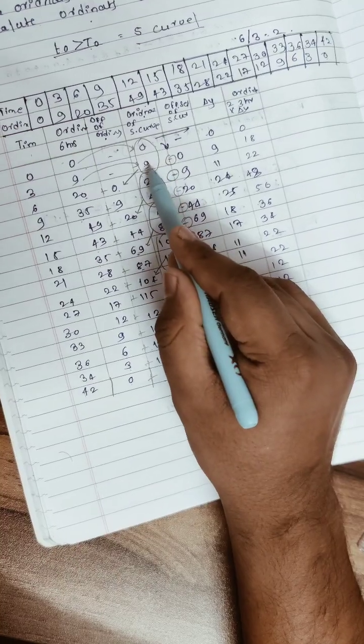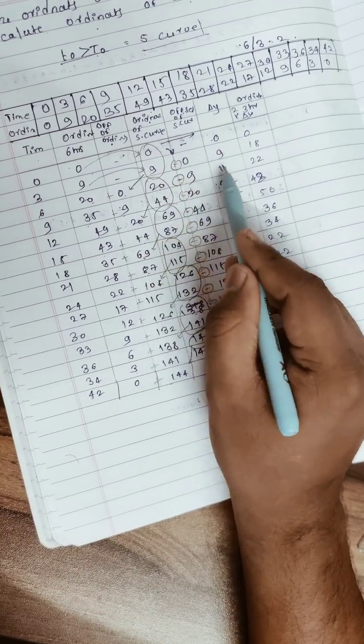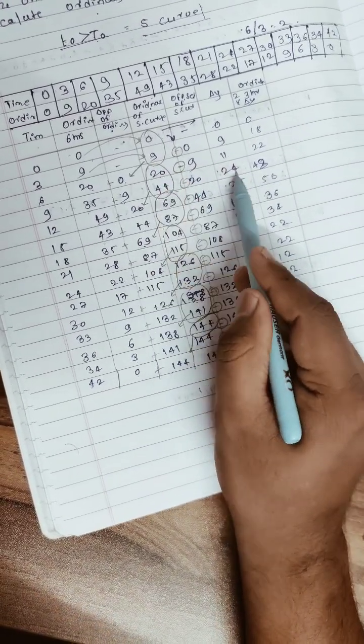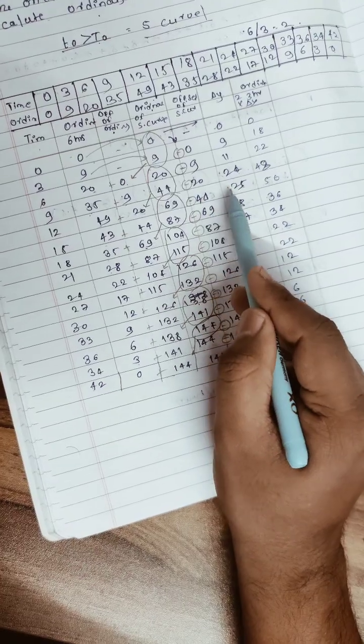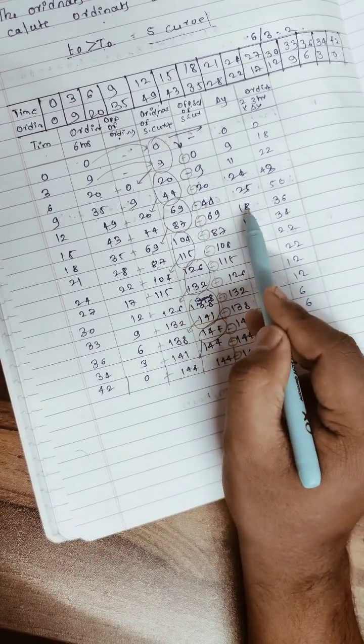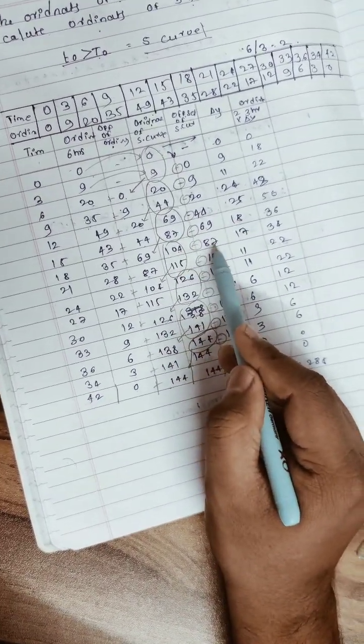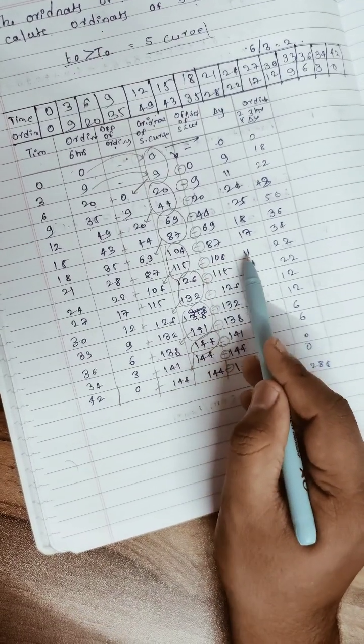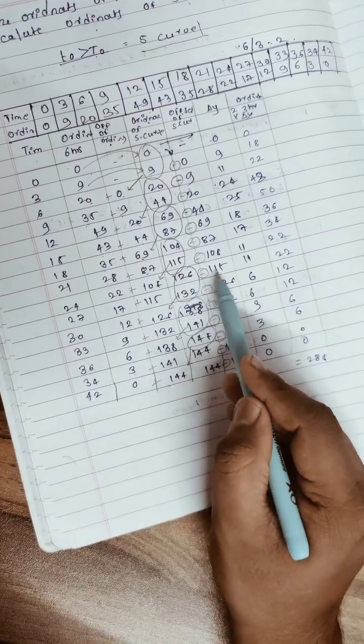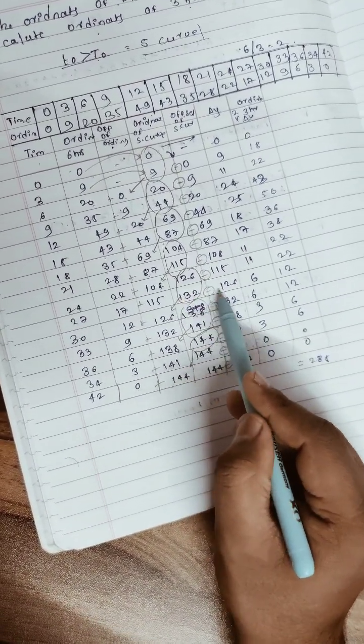69 minus 44 is 25, 87 minus 69 is 18, 104 minus 87 is 17, 115 minus 104 is 11, 126 minus 115 is 11, 132 minus 126 is 6.